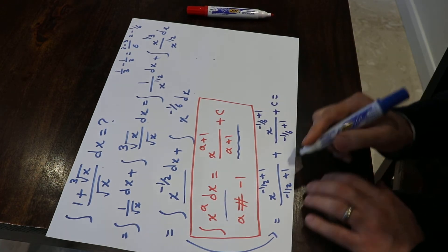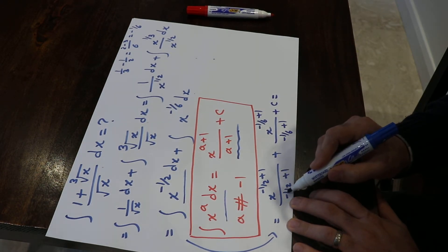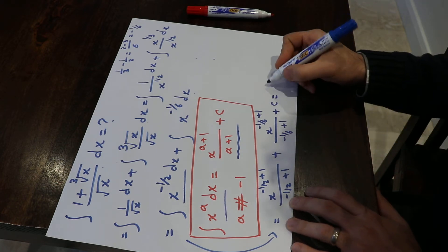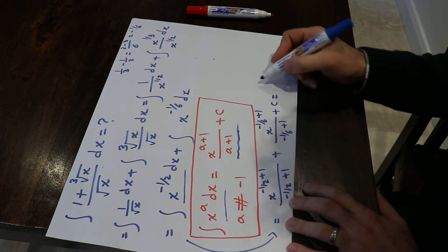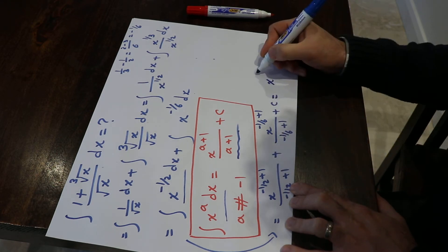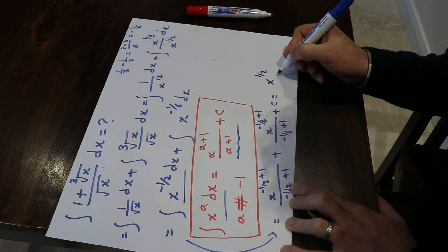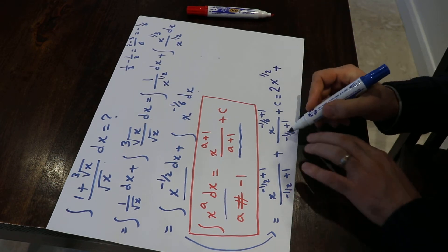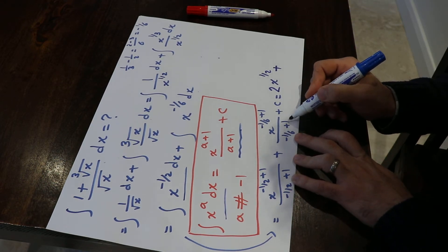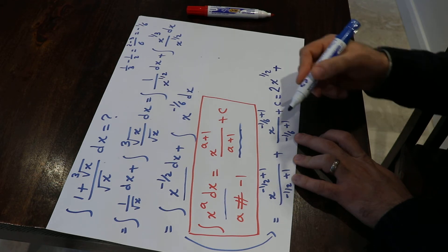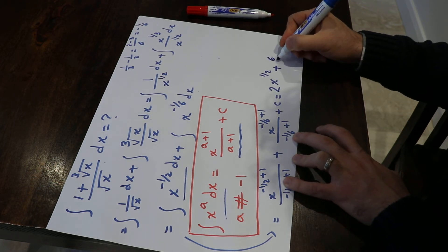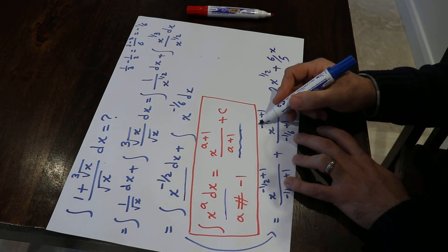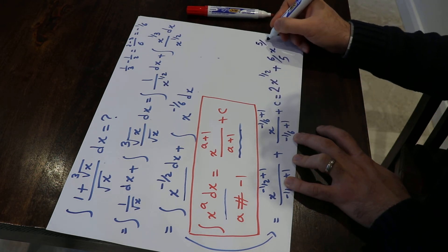You can also write it in a simpler way. Minus 1/2 plus 1 equals 1/2, so the first term becomes x to the power of 1/2 divided by 1/2, which equals 2x to the power of 1/2. Plus, minus 1/6 plus 1 equals 5/6, so the second term becomes 6/5 times x to the power of 5/6, plus the constant of the integral.